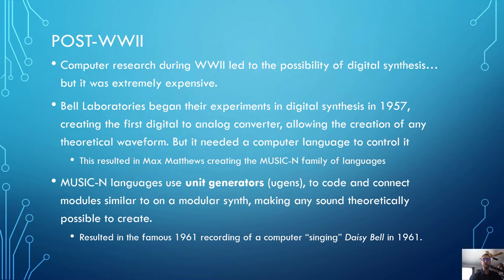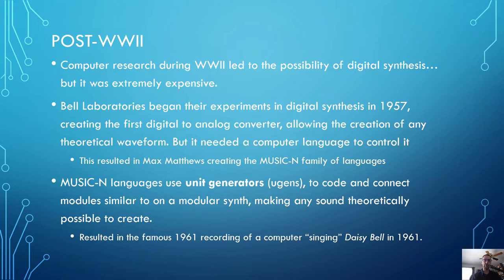This resulted in computer music pioneer Max Matthews creating the first of the MusicN family of languages, simply called Music or Music1. MusicN — where N is the number, with five iterations, Music1 through 5 — are all languages that use unit generators or UGENs to code and connect modules similar to those on a modular synth. You would have a UGEN as an oscillator, a UGEN as an amplifier, a UGEN for reverb, and you would pass variables from one to the other, very similar to patching cables on a modular synth.